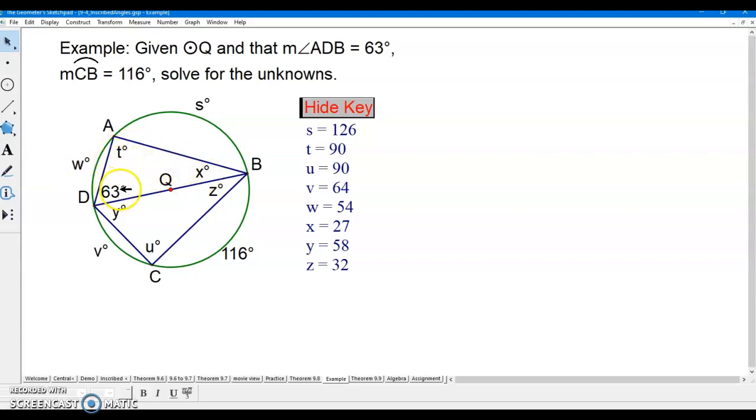Then also, you could say the three angles inside the triangle should add up to 180. And we already know 90 and 63. 90 minus 63 would leave 27. So there's two ways to get that. Similar on the triangle on the bottom here. You could take half of 116 to get Y, and you could take half of V to get Z. Or Y and Z should add up to 90 because they're the two acute angles of a right triangle.